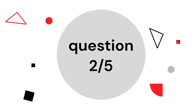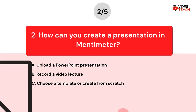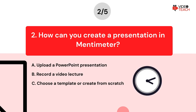Question number two. How can you create a presentation in Mentimeter? Option A: upload a PowerPoint presentation. Option B: record a video lecture. Option C: choose a template or create from scratch. Now you have about 15 seconds to think about your answer.